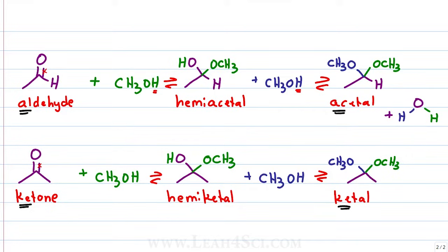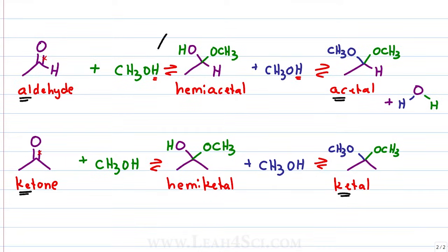But if the carbon that has two oxygens attached has an OH and an OR, that's your hemi. If there's a hydrogen, it's a hemiacetal. If there are two R groups, it's a hemiketal.